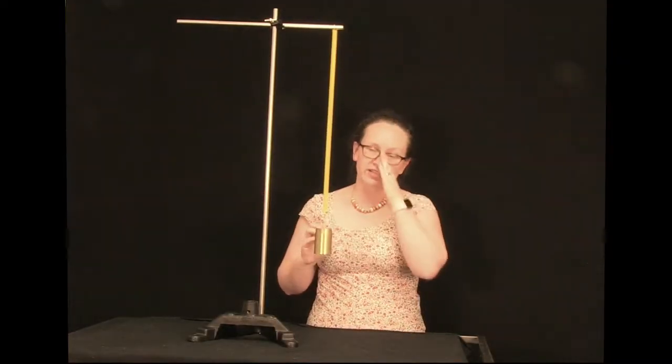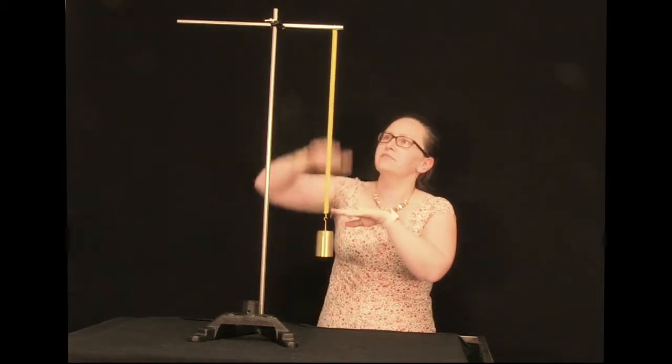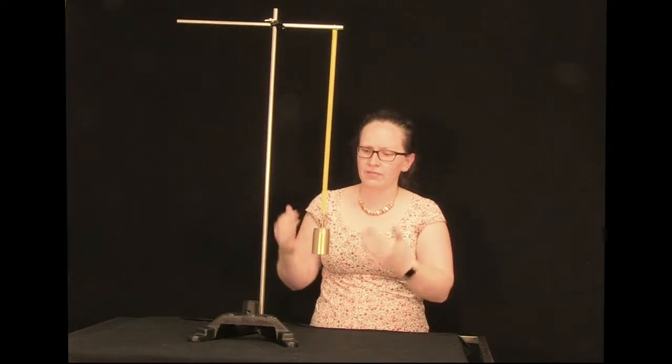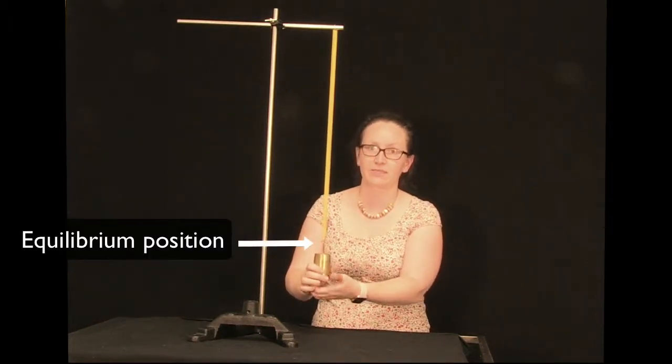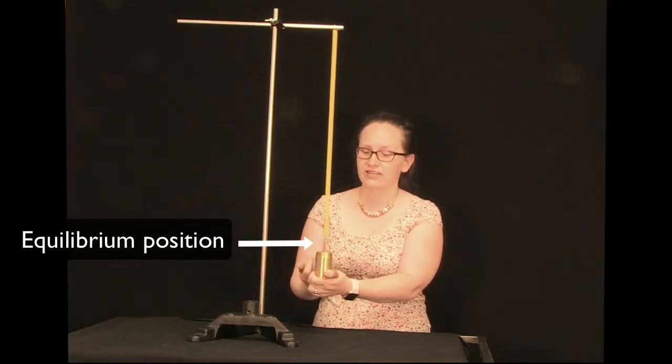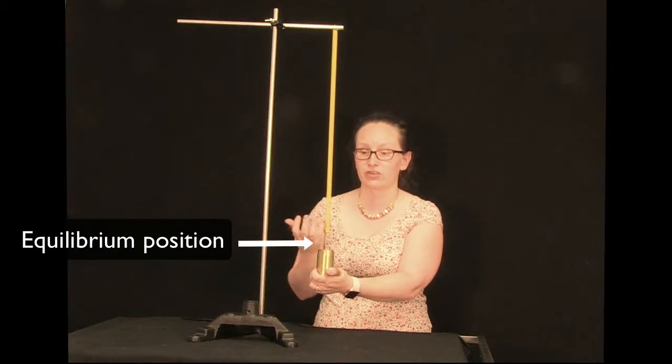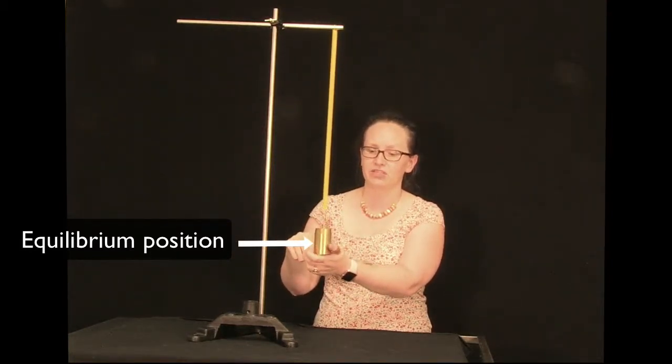So a mass on a spring such as this one is a nice example of simple harmonic motion. That's because this spring obeys Hooke's law. So when I move the spring away from the equilibrium position, like extending this mass downwards, there's now a force from the spring upwards as it tries to contract, and that force is proportional to the distance from that equilibrium position.